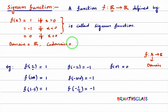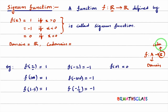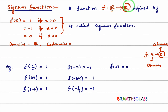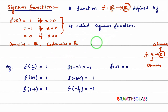Now, codomain. If f from A to B is a function, then set B is called the codomain. Here, since the function is from R to R, this second R is the codomain. So the codomain is the set of all real numbers. Domain is all real numbers and codomain is also all real numbers.